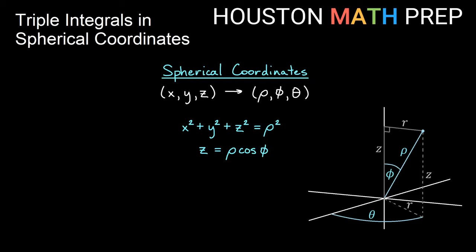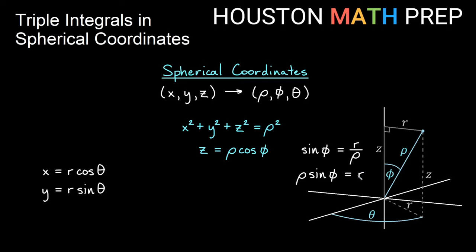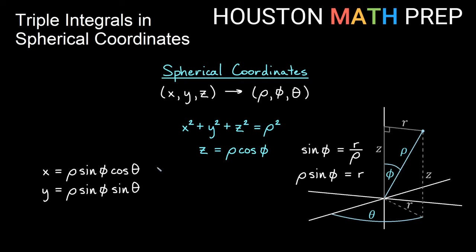For x and y, recall that in polar they were r cosine theta and r sine theta. We need to replace r since it's not part of our rho, phi, theta system. Taking sine of phi: opposite over hypotenuse gives r over rho, so rho sine phi replaces r. Therefore x = rho sine phi cosine theta and y = rho sine phi sine theta.